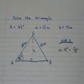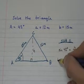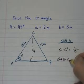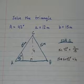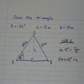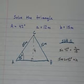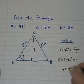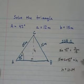Now solve this for H. Simply multiply by 15. So 15 times sine of 42 equals H. And if I multiply that, 15 times sine of 42, I get H equals 10.04.